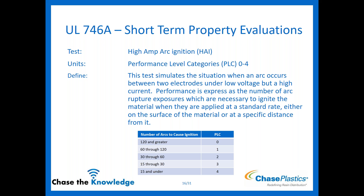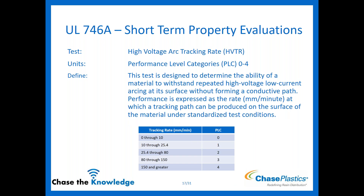HAI — High Amp Arc Ignition — is also on a PLC scale of zero to four. It simulates a situation where an arc occurs between two electrodes under low voltage but high current. This is given in the number of arcs it takes to cause ignition: 120 or greater arcs gives a PLC of zero, down to 15 or less giving a four. High Voltage Arc Tracking Rate is also a PLC rating of zero to four — it determines the ability to withstand repeated high voltage, low current arcing on the surface without creating a conductive path. This one is done in millimeters per minute: zero through 10 mm/min gives a zero, and 150 or greater gives a four.